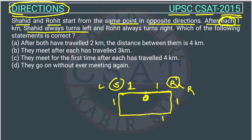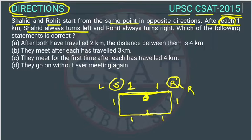They both meet here after walking one kilometer each, because this total is also two kilometers and this is also two kilometers. So this is the meeting end point. Now we have to determine which of the following statements is correct.